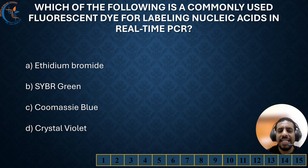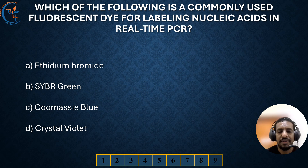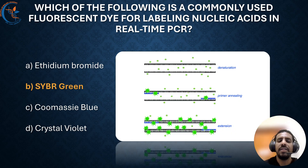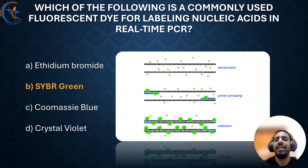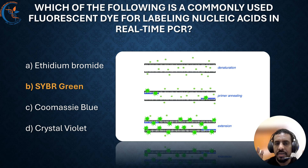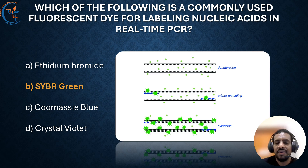Which of the following is a commonly used fluorescent dye for labeling nucleic acid in real-time PCR? The correct answer is SYBR Green. SYBR Green is a widely used fluorescent dye for labeling nucleic acids in real-time PCR. It binds specifically to double-stranded DNA and emits a bright fluorescent signal when excited by light. This fluorescence increases as more DNA is amplified, allowing scientists to monitor the PCR reaction in real-time. SYBR Green is popular because it is highly sensitive, cost-effective, and easy to use, making it a common choice for genetic studies and DNA quantification.